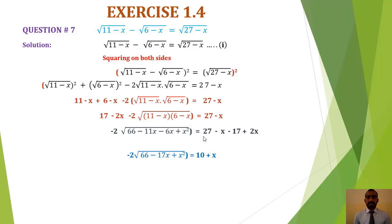Adding: 11+6 = 17 and −x−x = −2x, so 17−2x − 2√[(11−x)(6−x)] = 27−x. Multiplying out under the radical: (11−x)(6−x) = 66 − 11x − 6x + x² = x²−17x+66. So we have 17−2x − 2√(x²−17x+66) = 27−x. Rearranging: −2√(x²−17x+66) = 27−x−17+2x = 10+x.